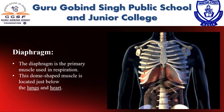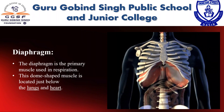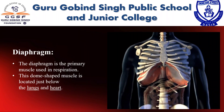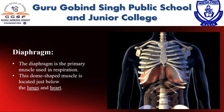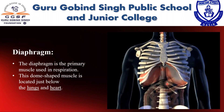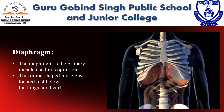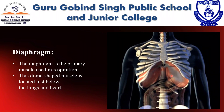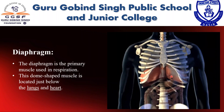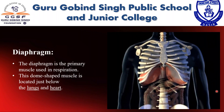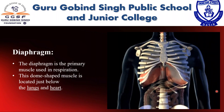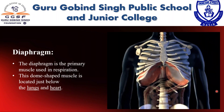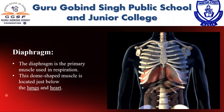The diaphragm is the primary muscle used in respiration, which is the process of breathing. This dome-shaped muscle is located just below the lungs and heart. It contracts continuously as you breathe in and out. It contracts and flattens when you inhale, creating a vacuum effect that pulls air into the lungs. When you exhale, the diaphragm relaxes and air is pushed out of the lungs.